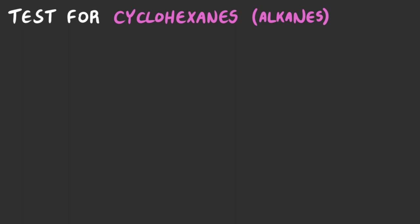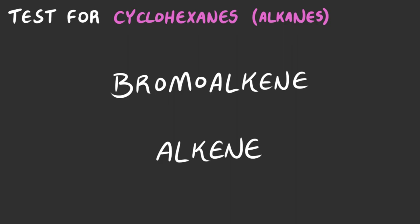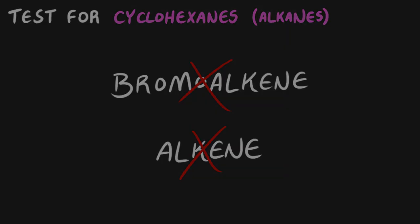If your organic compound tests negative to the two tests prior — namely the test for bromoalkenes and the test for alkenes — then it is most likely a cyclohexane due to its high unreactivity. A written version of each of the tests will be available in the description below.